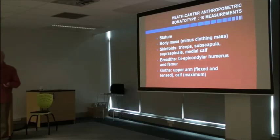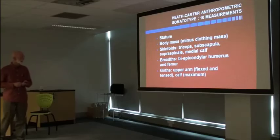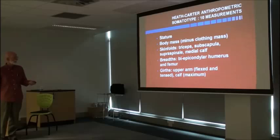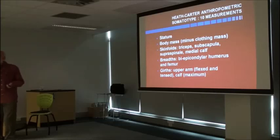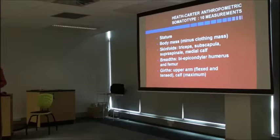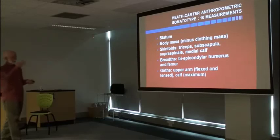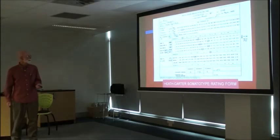There are two basic methods or a combination of the two. We've got the photoscopic somatotype from standardized photographs. So you can rate from looking at the person in a standardized posture. The anthropometric somatotype, which is the basic field method, if you take ten anthropometric variables, you can calculate the somatotype. And this is the most commonly used method.